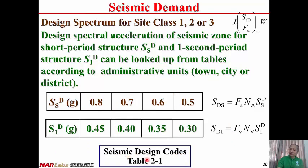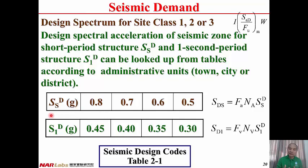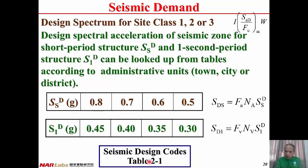From seismic design code table 2-1 and the administration unit of the site, we can look up SSD and S1D. SSD may be 0.8, 0.7, 0.6, or 0.5 depending on the location. S1D may be 0.45, 0.4, 0.35, or 0.3 depending on the location.